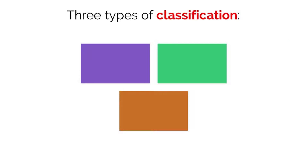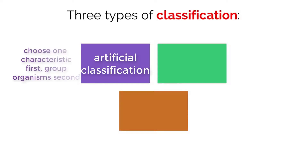When classifying organisms into this hierarchy of groups, there are different approaches that scientists can take. Artificial classification involves scientists choosing only one or two unifying characteristics first, and then proceeding to group organisms. For example, looking at the characteristic of a fin would mean grouping all organisms with fins and then sorting them based on their morphology. While this method can be helpful, it unfortunately does not correctly show and predict evolutionary relationships.